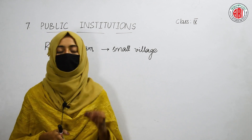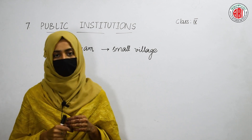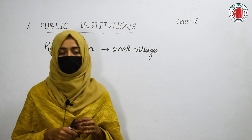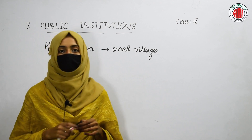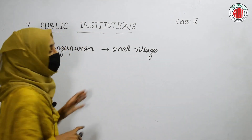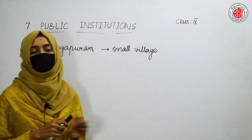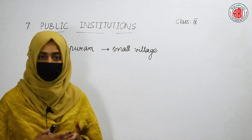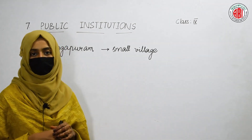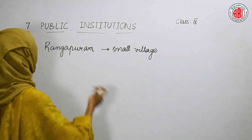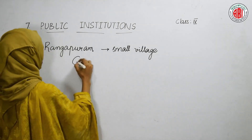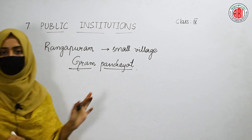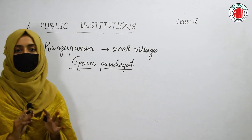The electric poles got damaged and even the pipes were damaged. So all these things got damaged. Now, who will take care of this? Who will solve this problem? Who will make the streets clean and who will help the people in the village?